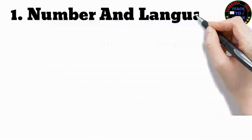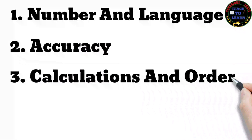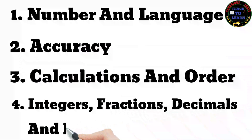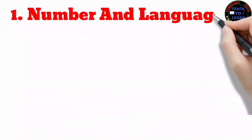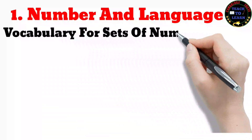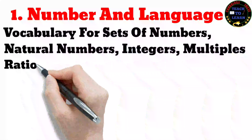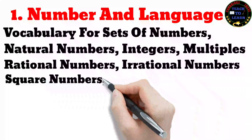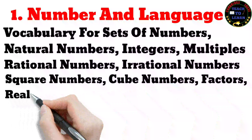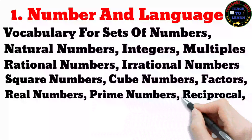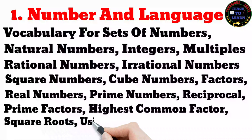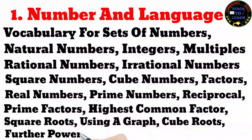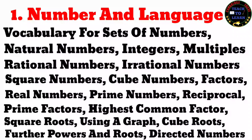The four topics are: number and language, accuracy, calculations and order, and integers, fractions, decimals and percentages. In the number and language topic, we are learning about vocabulary for sets of numbers — natural numbers, integers, multiples, rational numbers, irrational numbers, square numbers, cube numbers, factors, real numbers, prime numbers, reciprocal, prime factors, highest common factor, square root, cube root, further powers and roots, and directed numbers. Don't worry — these are just a piece of cake and you may have learned them before.